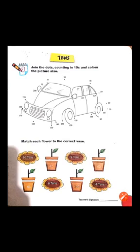آپ نے اپنی pencil کو 100 point تک لے کر آنا ہے۔ اس کے بعد آپ نے pencil کو move کرنا ہے 100 سے 110 تک، پھر 110 سے 120 تک۔ 120 پر اپنی pencil کو لے کے آئیں، اس کے بعد move کریں 130 پر، پھر jump کر کے 140 پر آنا ہے۔ 140 کے بعد jump کرنا ہے 150 پر، پھر 150 سے 160، پھر 170 کو skip کر کے 180 پر، 180 سے 190، اور 190 سے 200 تک۔